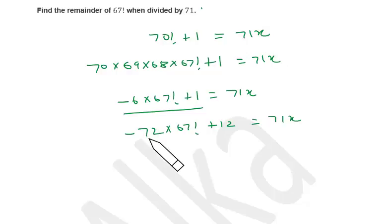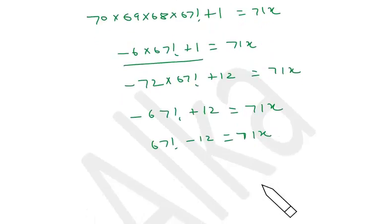Now 72 further divided by 71, the remainder will be 1 only. So finally we are getting minus 67 factorial plus 12, and that is a multiple of 71. So now I want 67 factorial to be positive, so I multiply this entire expression by minus 1 precisely. So 67 factorial minus 12 is a multiple of 71, that means 67 factorial is basically a multiple of 71 plus 12. So now 67 factorial can be written as 71x plus 12.